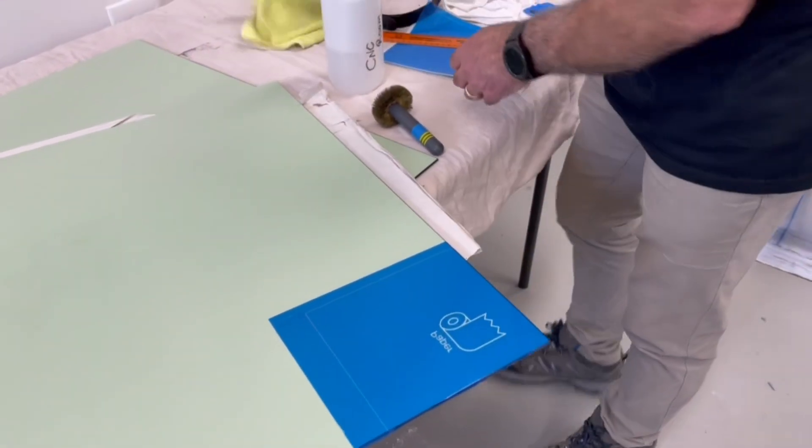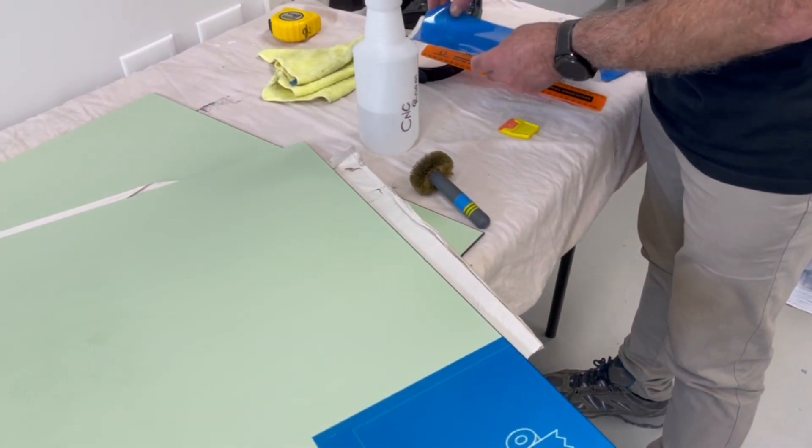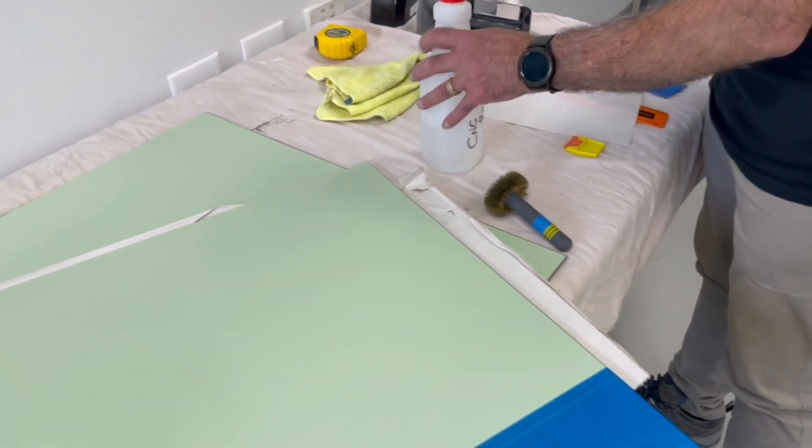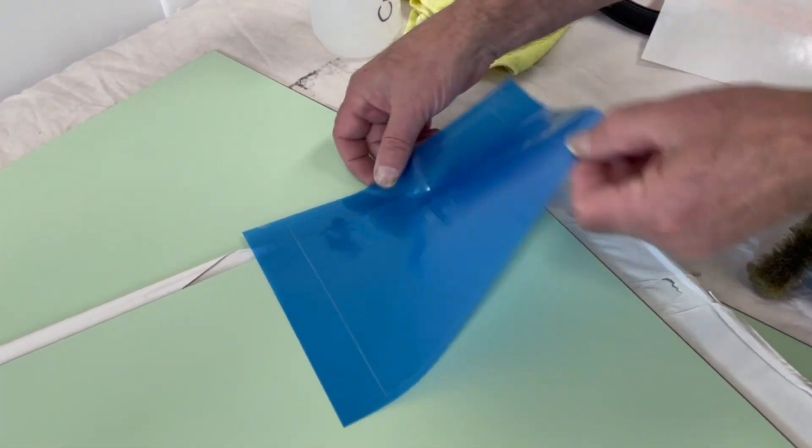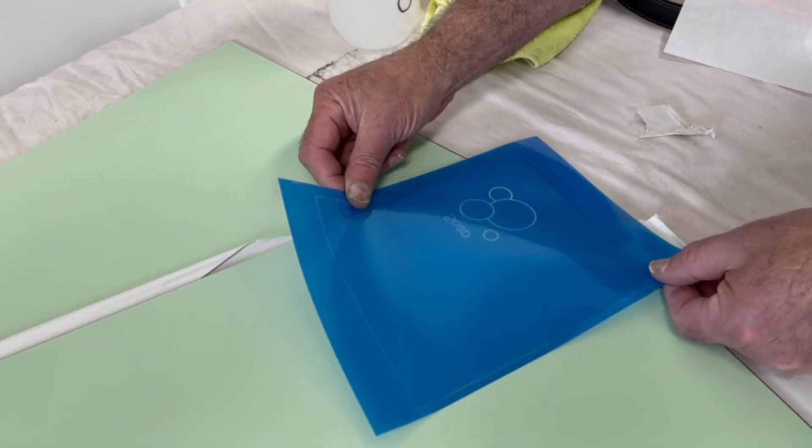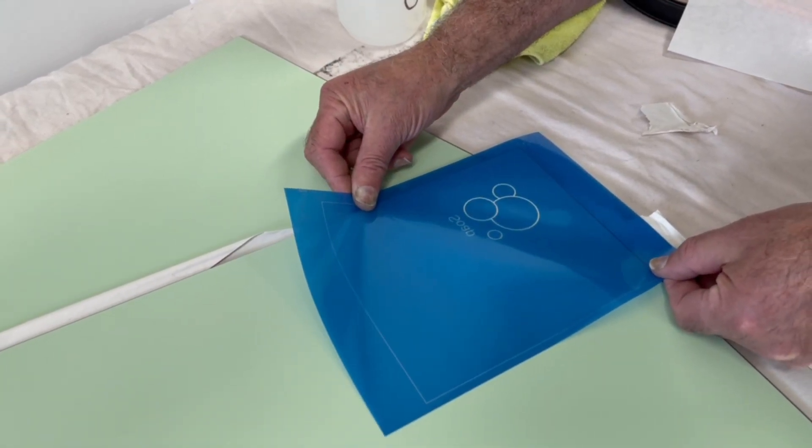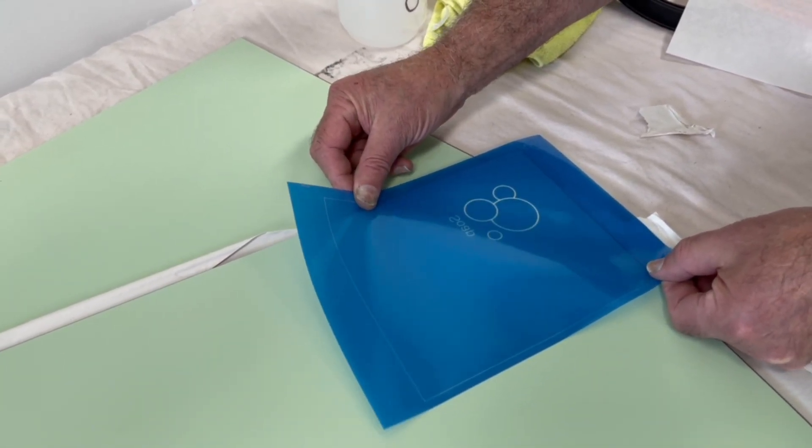Applying the SR3000 photopolymer mask onto a surface is remarkably easy and straightforward. The mask is designed with an adhesive side which simplifies the application process. Simply peel off the backing paper, align the mask onto the surface, and firmly press it down with the squeegee, ensuring proper contact and eliminating any air bubbles.